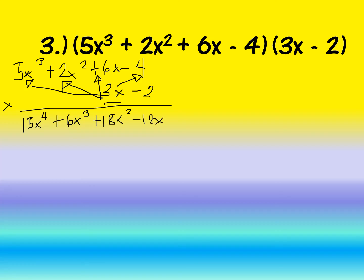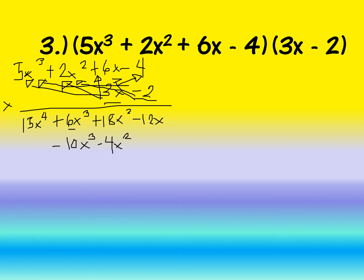Now proceed to negative 2. Negative 2 times 5x³ gives negative 10x³. Then negative 2 times 2x² gives negative 4x². Then negative 2 times 6x gives negative 12x. Finally, negative 4 times negative 2 gives positive 8.